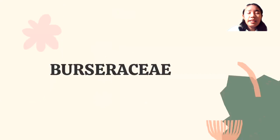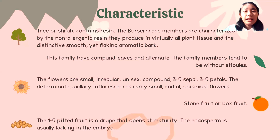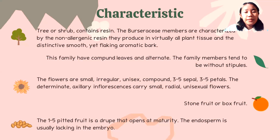The fourth family is Burseraceae. The Burseraceae has the characteristic of trees or shrubs that contain resin. The Burseraceae members are characterized by the non-allergenic resin they produce in virtually all plant tissue and their distinctive smooth yet flaking aromatic bark. This family has compound leaves and alternate arrangement. The family members tend to be without stipules. The flowers are small, irregular, unisex, compound, 3–5 sepals, 3–5 petals, with determinate axillary inflorescences bearing small, radial, and unisexual flowers. The fruits are stone fruits or capsules. The fruit is a drupe that opens at maturity. The endosperm is usually lacking in the embryo.